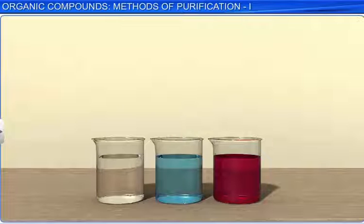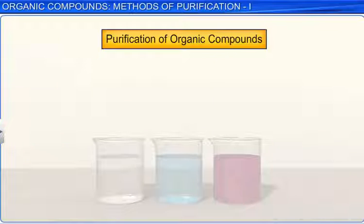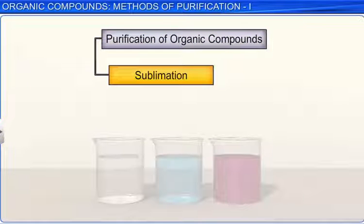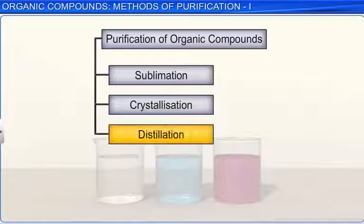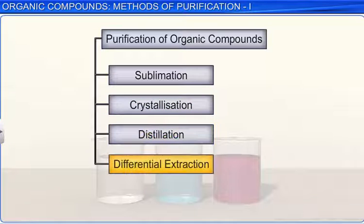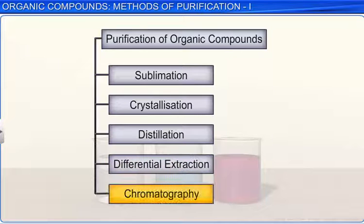Based on the nature of organic compounds and the impurities present in them, organic compounds can be purified using five different methods. These are sublimation, crystallization, distillation, differential extraction, and chromatography. In this module, we will look at the first three methods.